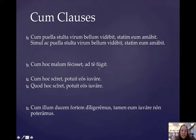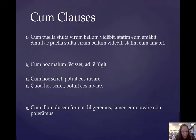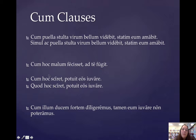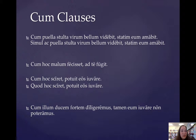The next example: cum hoc malum fecisset, ad te fugit — 'When he had done this evil thing, he fled to you.' This is a circumstantial one — it tells us the circumstances for which he fled to you: the circumstance that he did this evil thing, and because of that circumstance, he fled to you. The next example: cum sciret hoc, potuit eos iuvare — 'Since he knew this thing, he was able to help them.' This is causal — it gives us the cause of why he was able to help them: he was able to help them because he knew this thing. So this is a causal cum clause.